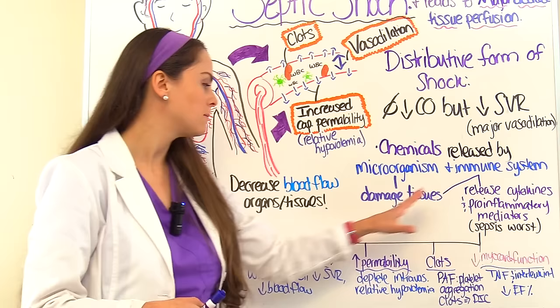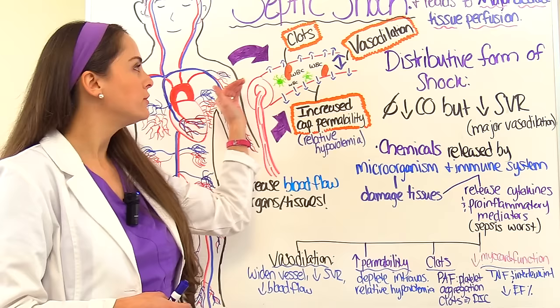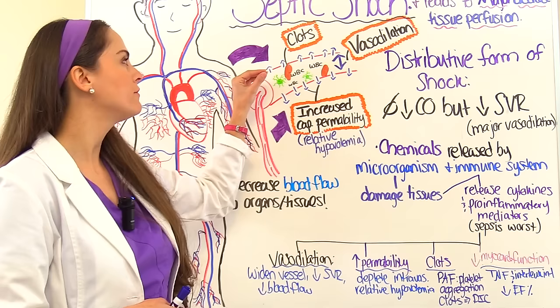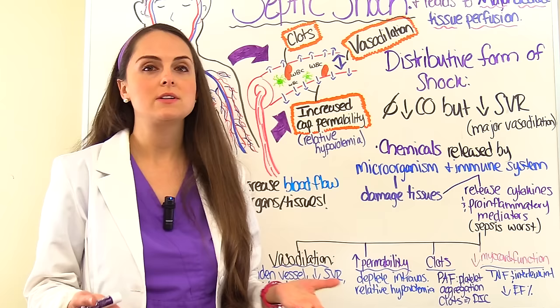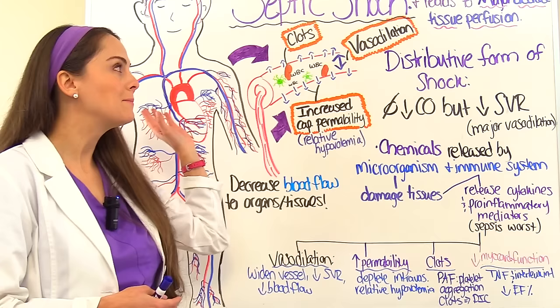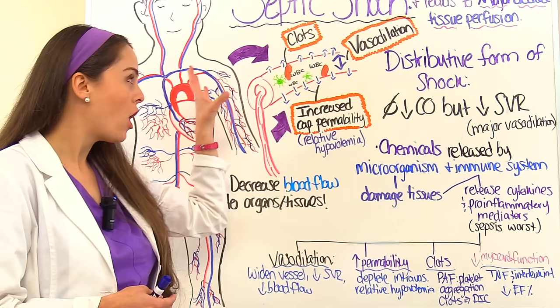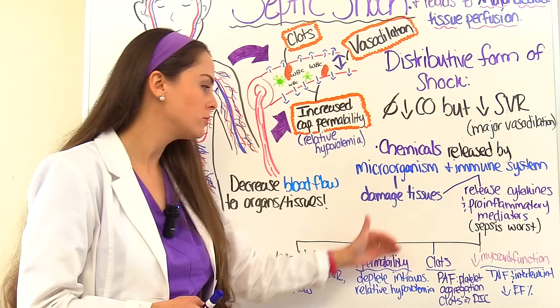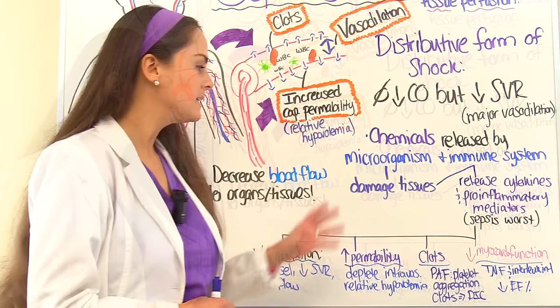The fluid in our circulatory system starts leaving — it moves out of the intravascular system into the interstitial tissue. This leads to hypovolemia, specifically relative hypovolemia, which further limits blood flow and oxygen reaching those cells. Combined with vasodilation, even less oxygen is being delivered effectively.